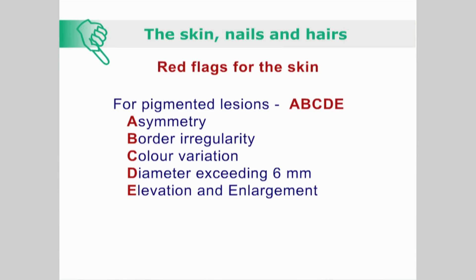Red flags relating to skin manifestations include the following. For pigmented lesions, use the mnemonic ABCDE: asymmetry, border irregularity, colour variation, diameter exceeding 6 mm, and elevation and enlargement. The Glasgow 7-point checklist is also useful for malignant suspect lesions.